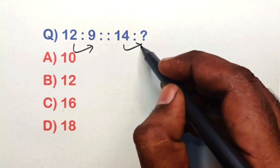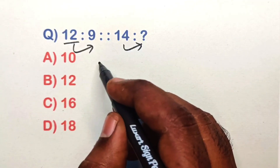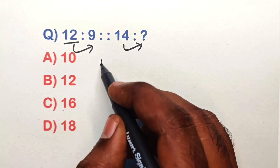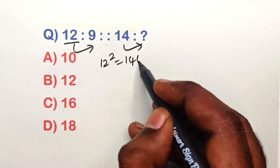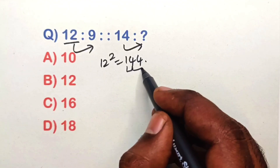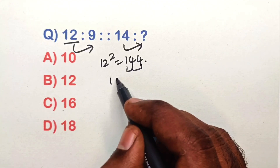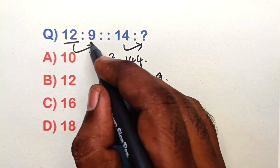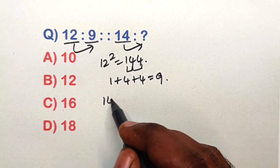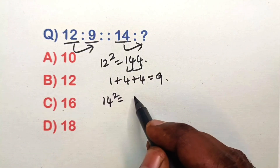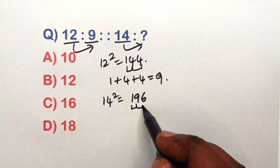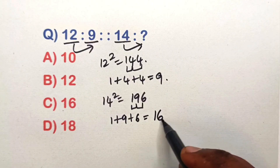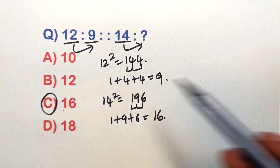Find the relation in this analogy question. Take 12: 12 squared is 144 — add digits: 1 plus 4 plus 4 equals 9. Same way, 14 squared is 196 — add digits: 1 plus 9 plus 6 equals 16. That is option C.